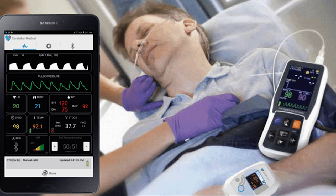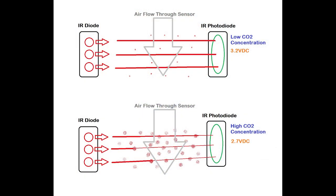Capnography shows instant patient reaction to drug therapy, sudden changes in health conditions, and the patient's reaction to mechanical ventilation settings. EtCO2 sensors consist of infrared light-emitting diodes which shine across a gas sample exhaled by the patient. That light is measured by a photosensor on the other side of the gas sample. CO2 naturally absorbs infrared light, so the more infrared light that's measured means a lower amount of exhaled CO2, and inversely, the lower the amount of IR light means the higher amount of exhaled CO2.